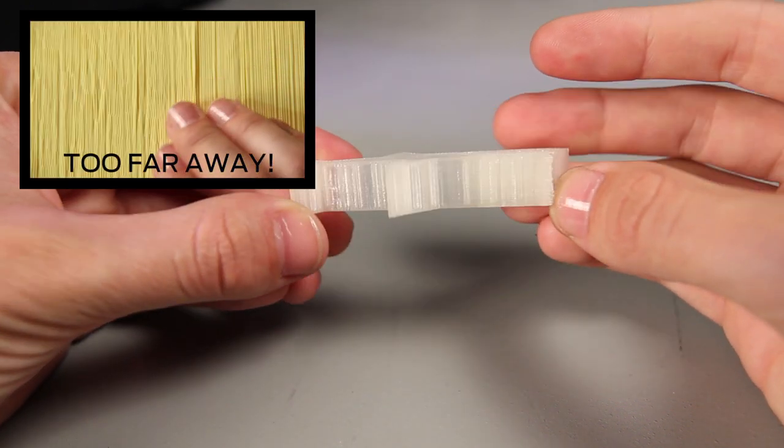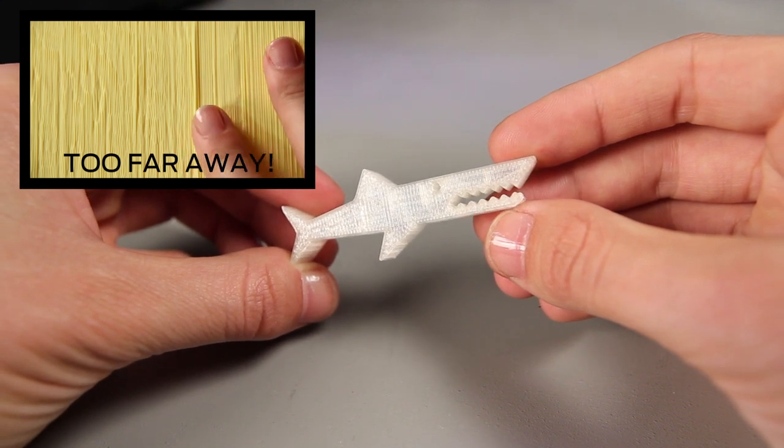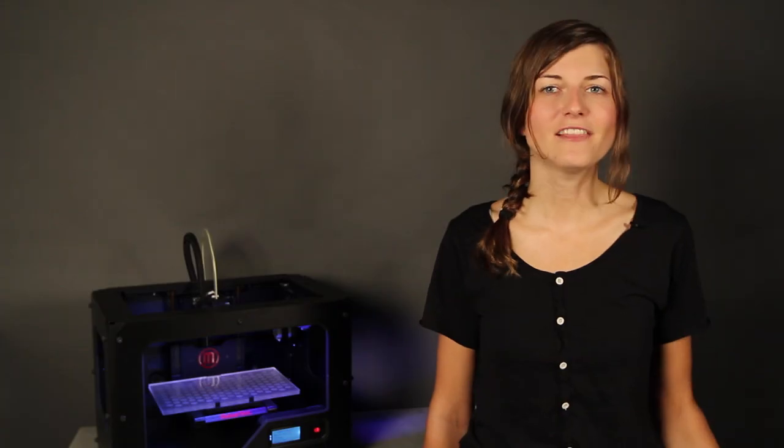If it looks stringy, like this, your platform is probably too far away from your extruder. Try the leveling process one more time, and if you still can't get it right, be sure to contact our expert support team by emailing support at MakerBot.com.